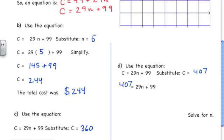I'm going to again have to isolate N. So if I subtract 99 from both sides, I'm going to get 308 is equal to 29N. And then we'll have to divide both sides by 29. So I'm going to get N is equal to, and if you take 308 and divide it by 29, it comes out to be 10.6.